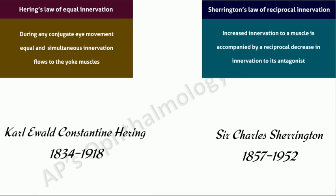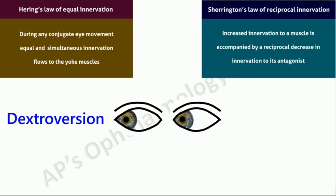In dextroversion, equal and simultaneous innervation flows to the yoke muscles for dextroversion, i.e. the right lateral rectus and the left medial rectus. This is Hering's law.